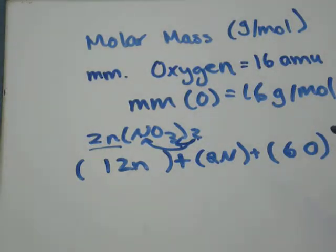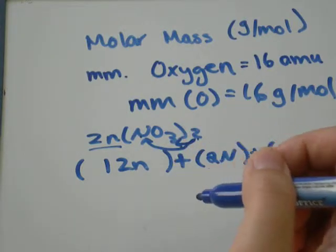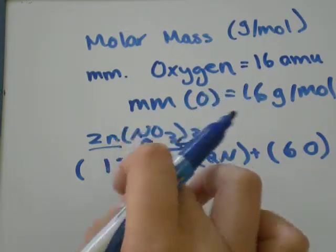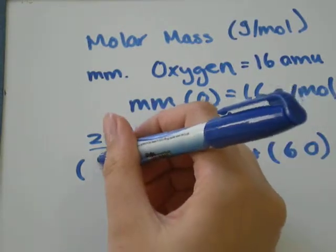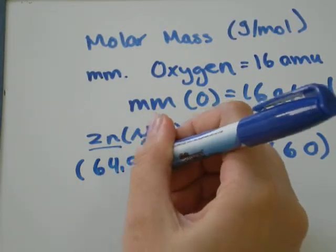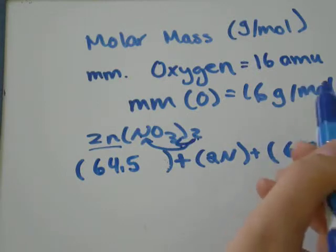So let's find the zinc on the periodic table somewhere. Where are you? Zinc has a mass of 64.5. So 1 atom of zinc would have a mass of 64.5 amu, atomic mass units,